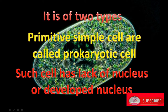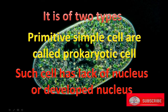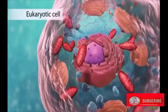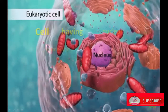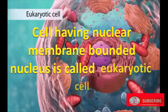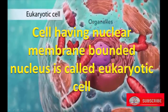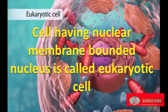Primitive, simple cells are called prokaryotic cells. Such cells have a lack of nucleus or a less developed nucleus. Cells having a nuclear membrane-bounded nucleus, or having a developed nucleus, are called eukaryotic cells.